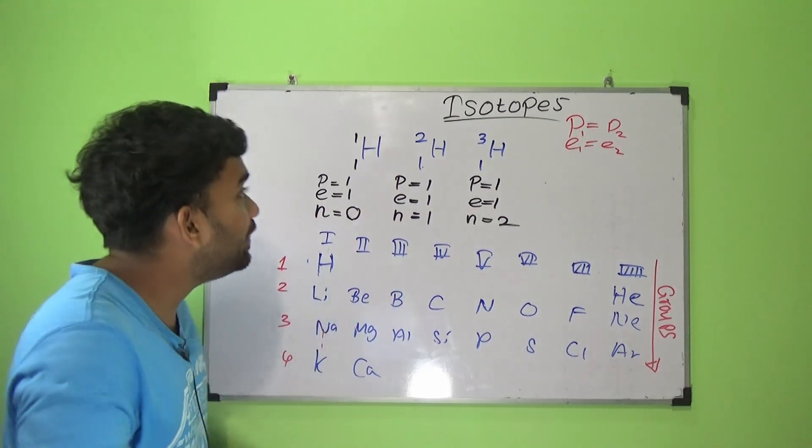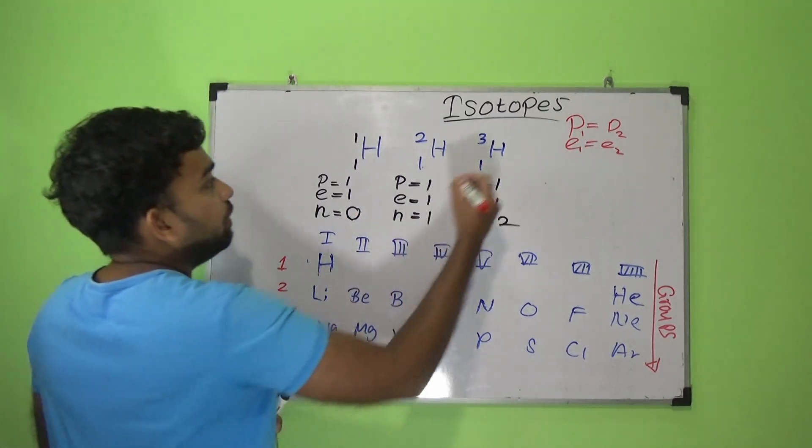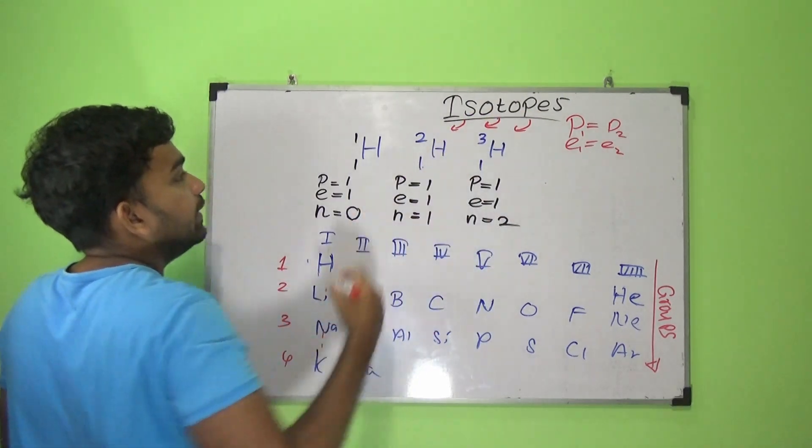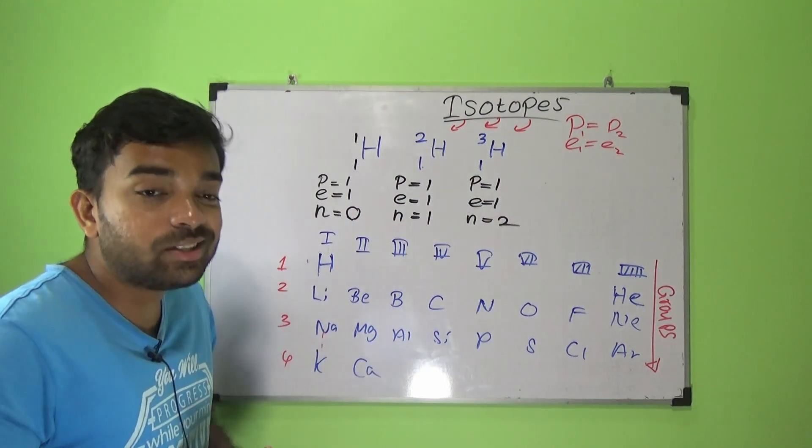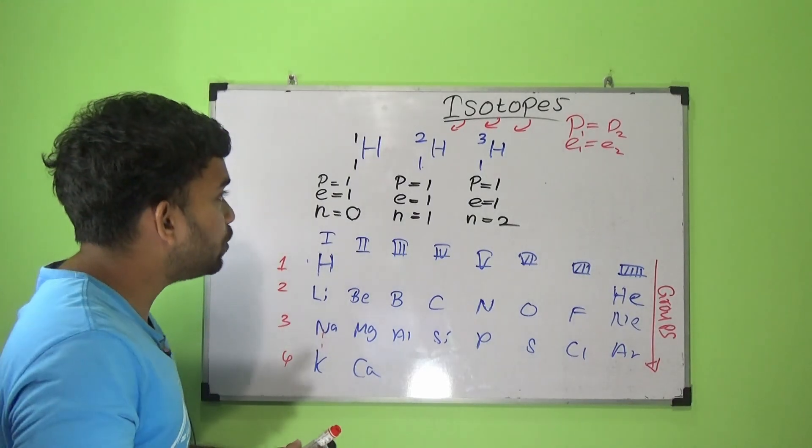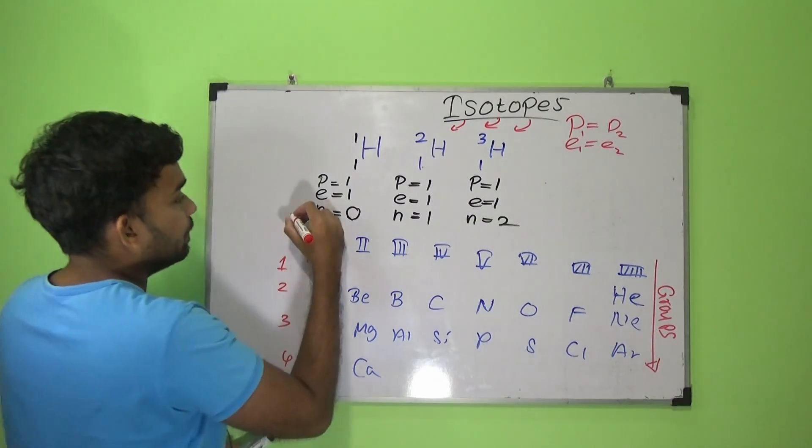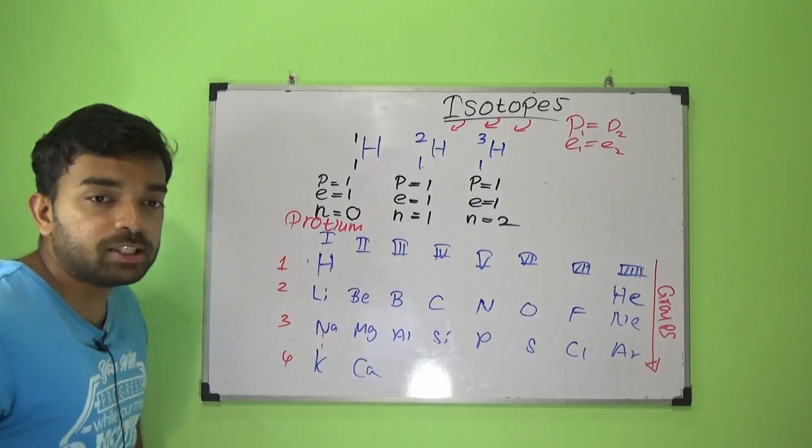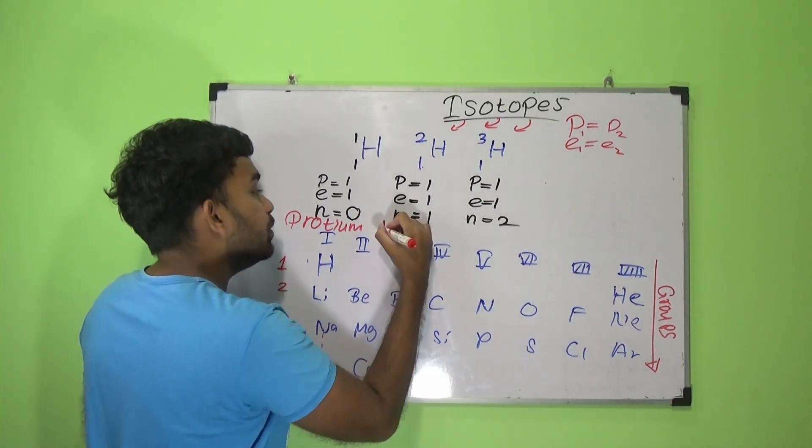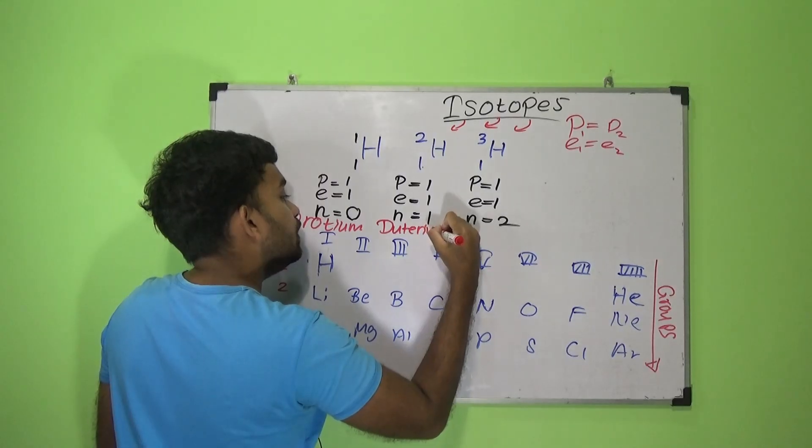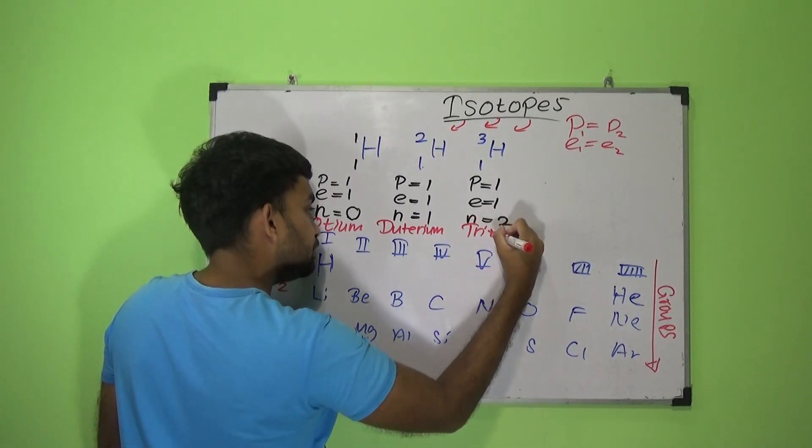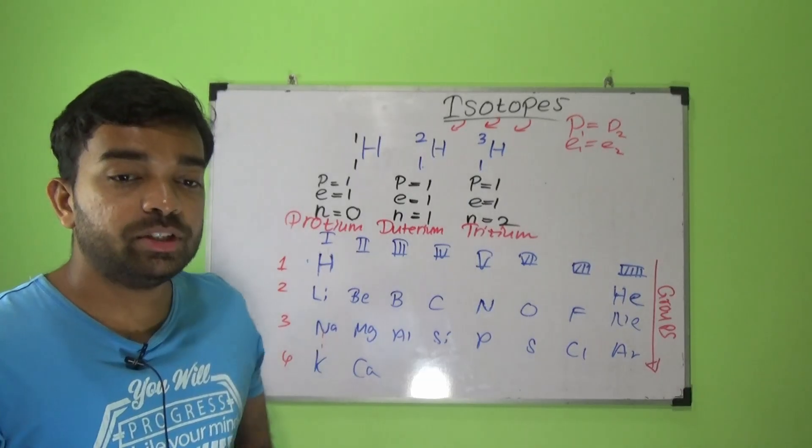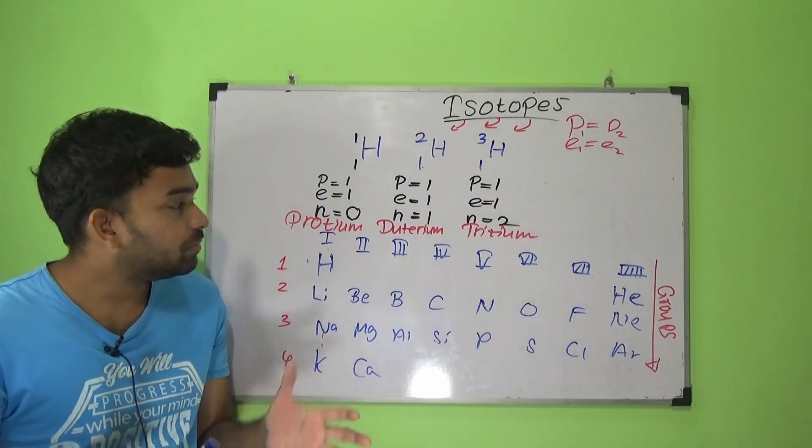So we call them isotopes. We call these things isotopes of hydrogen. This is protium, this is deuterium, and this is tritium. Protium, deuterium, and tritium - isotopes.